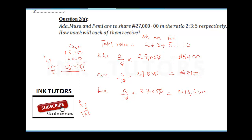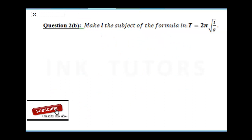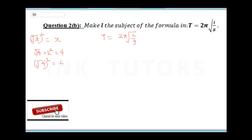Question 5 says: make l the subject of the formula, given t equals 2π times the square root of l over g. When you have a square root and need to isolate a variable, you must eliminate the square root. The key principle is: if you square a square root, it cancels — for example, the square root of 4, squared, gives 4.